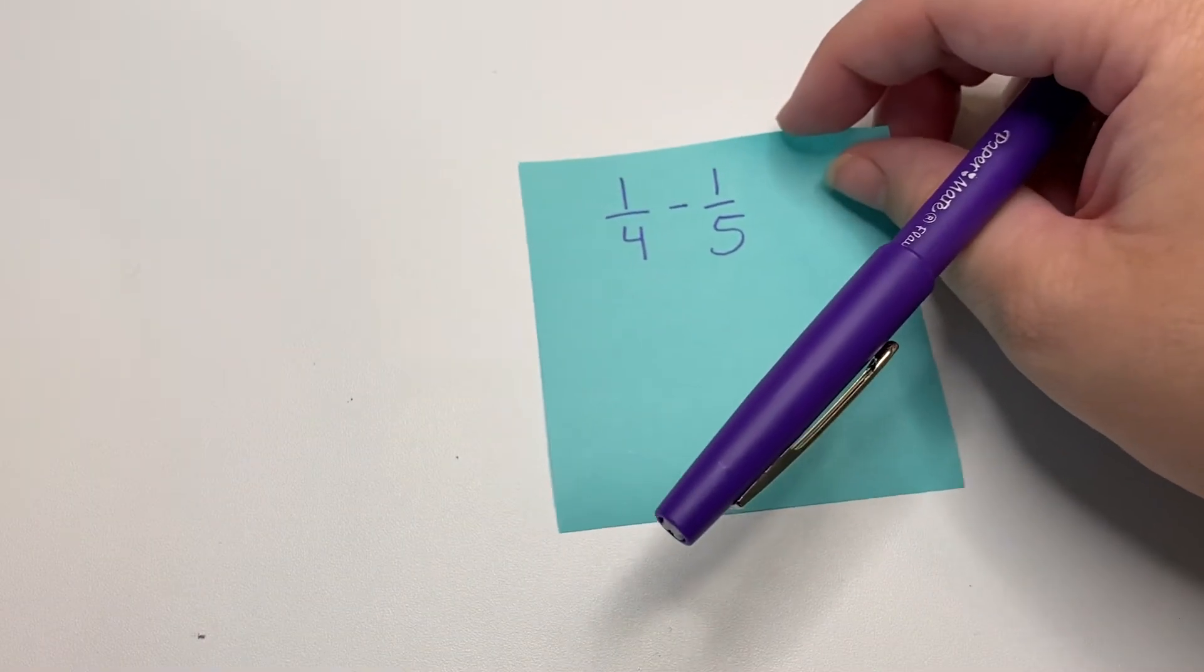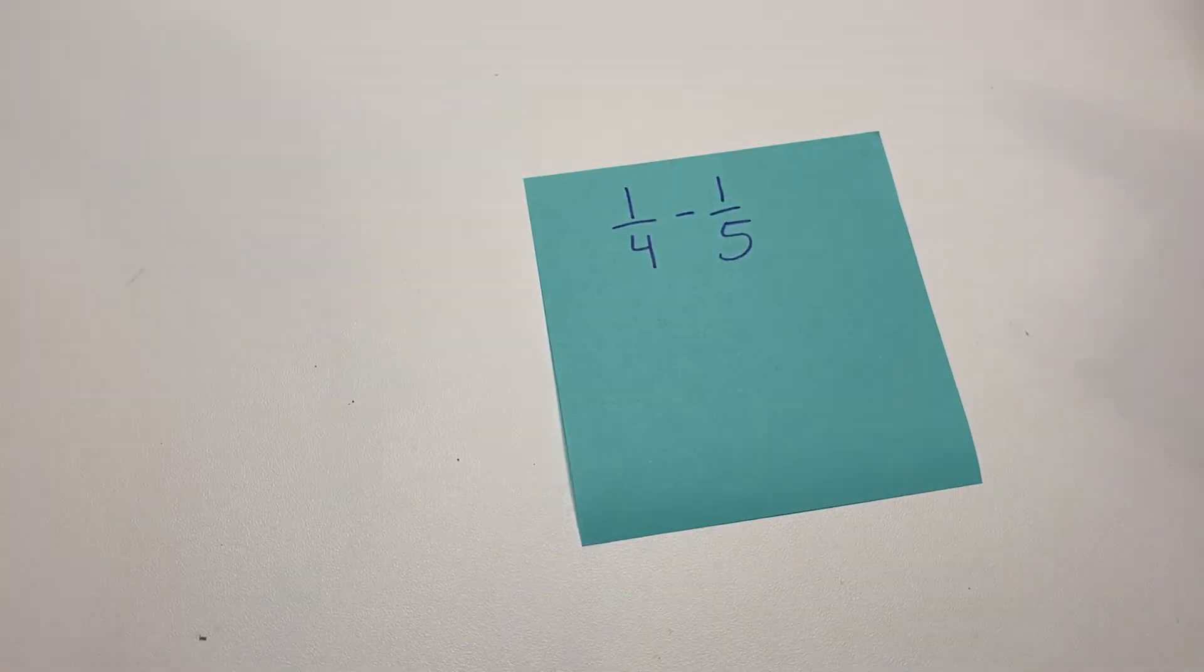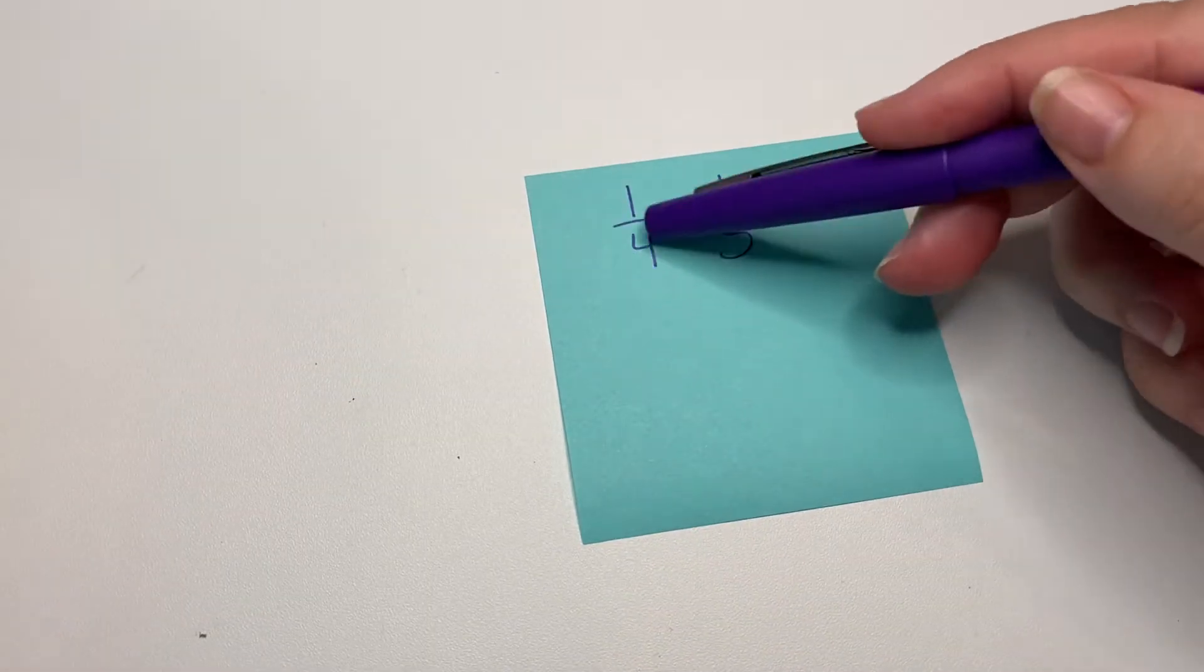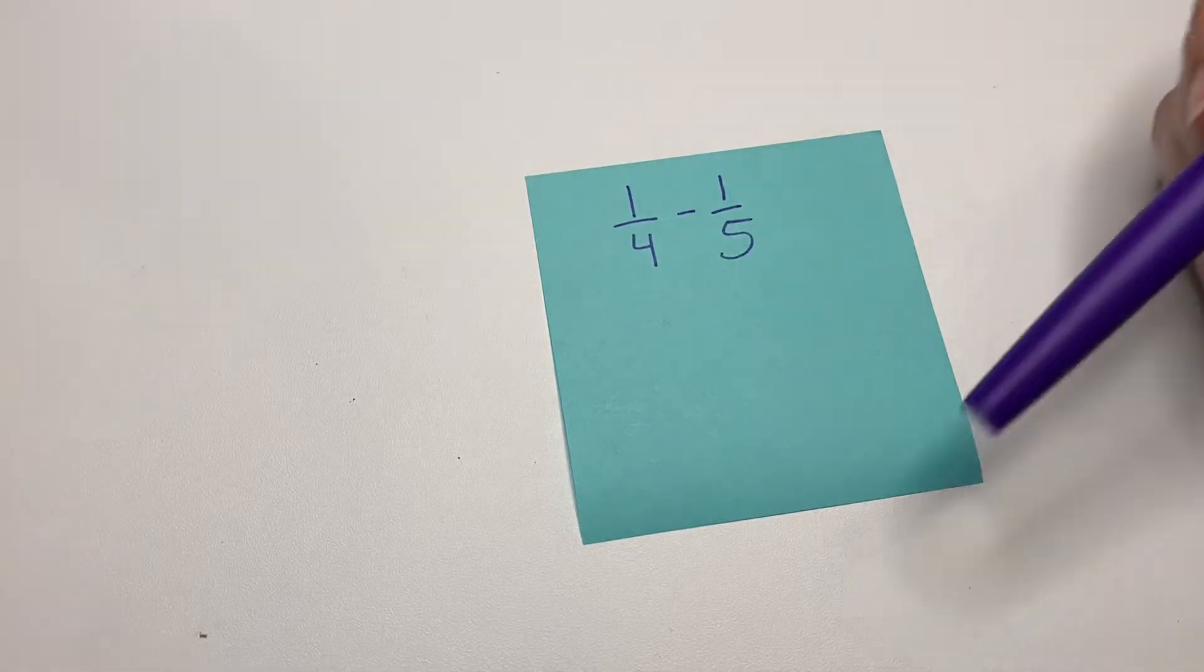And yesterday we also talked about looking for factors, checking for factors. So we're going to start with our first problem. And when we say checking for factors, we're checking for if one of the denominators goes into the other one.